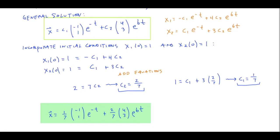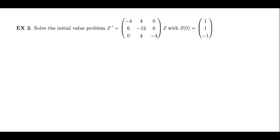In Example 2, I have another initial value problem with a system of differential equations and initial conditions. This system has been presented in vector-matrix form, and the detail that jumps out is that this is now a 3-by-3 coefficient matrix, meaning we have three equations each containing a derivative along with three dependent variables. As I mentioned earlier, though, the methodology of finding eigenvectors and eigenvalues and using those to construct a general solution works no matter what size the system is. So I should be able to proceed with essentially the same process as in the previous example.